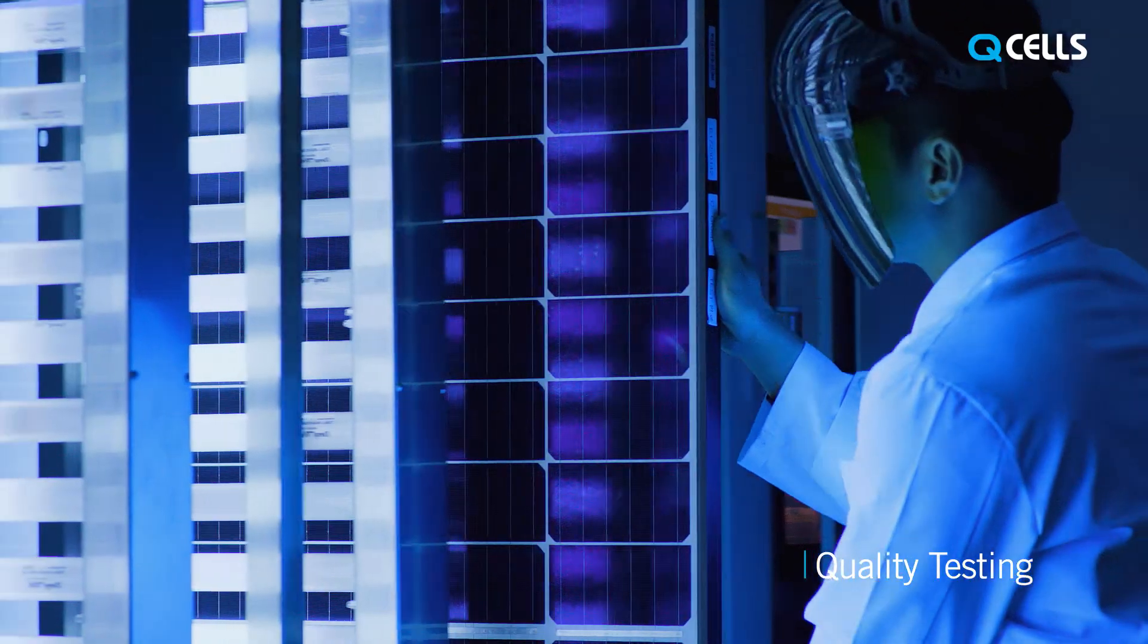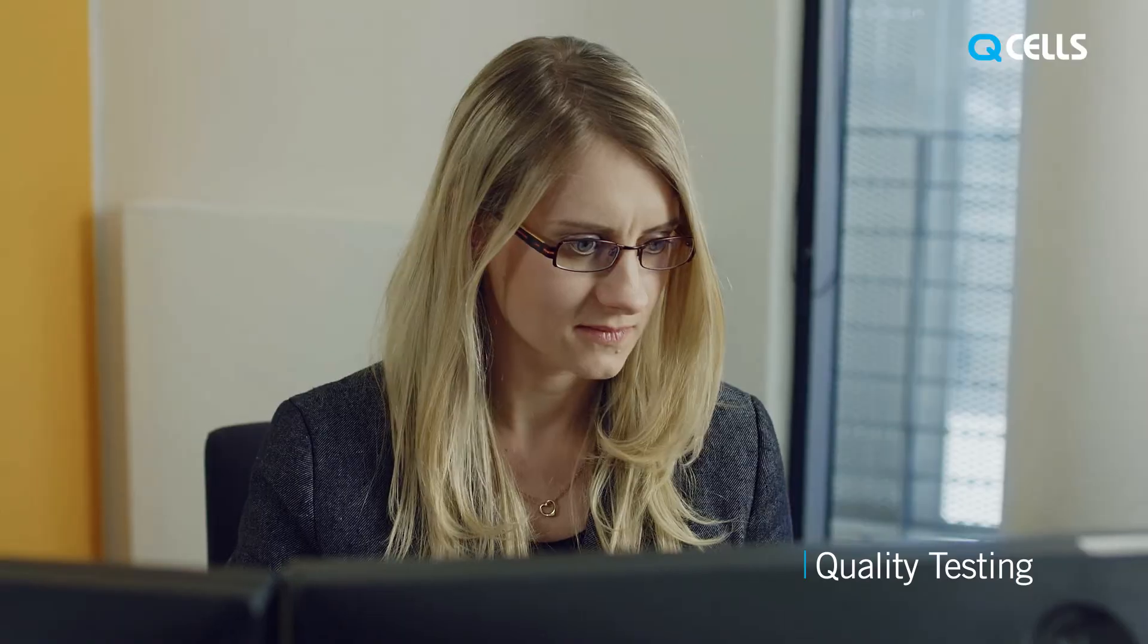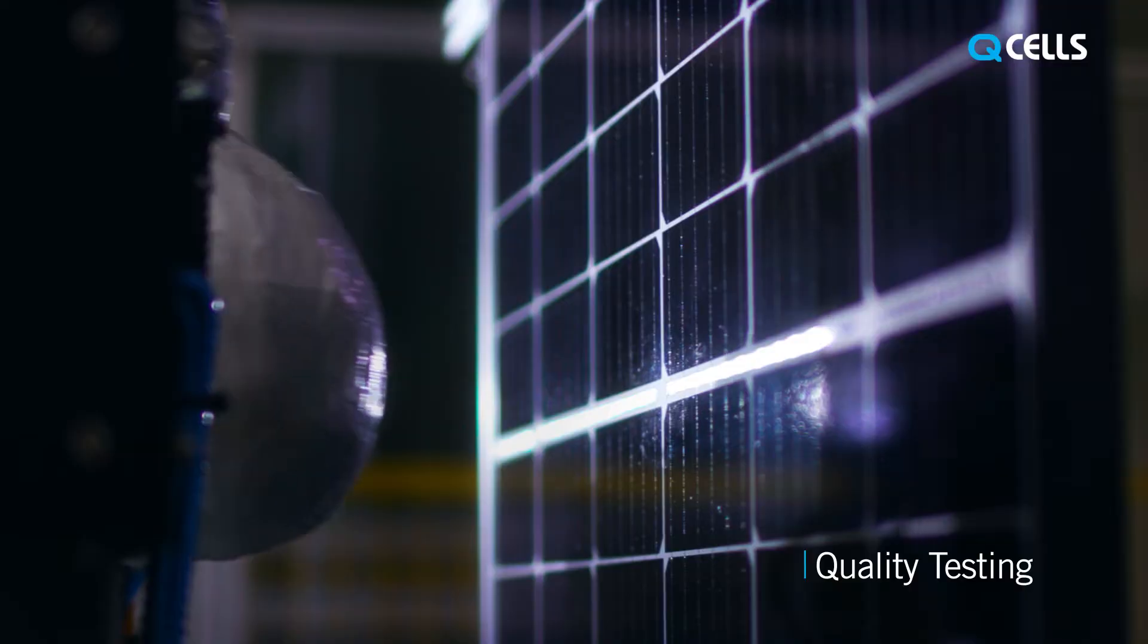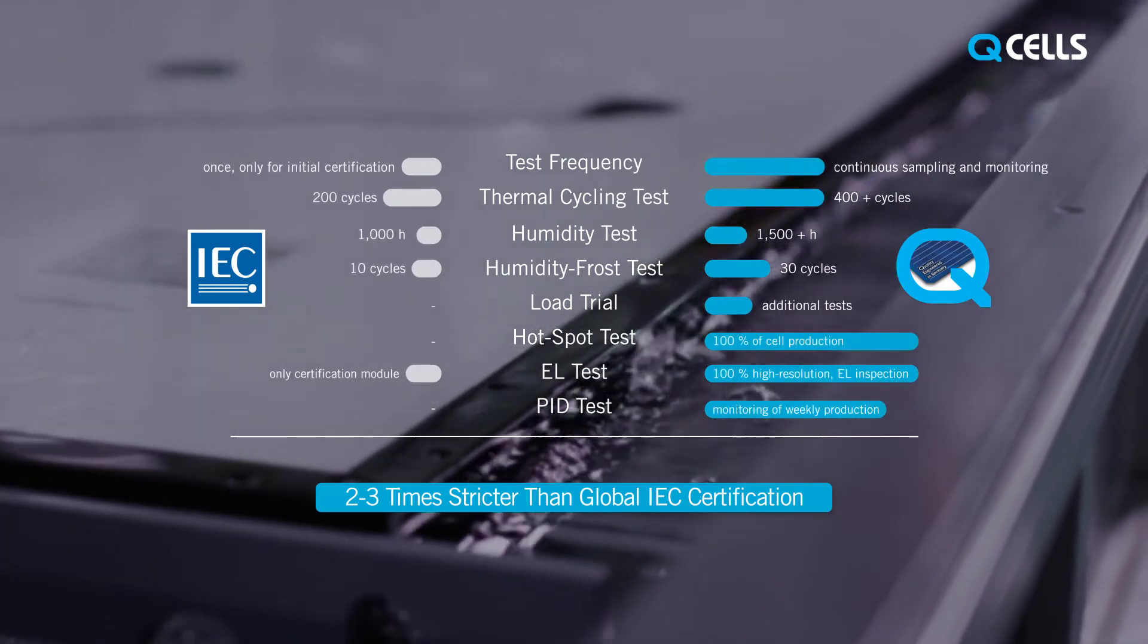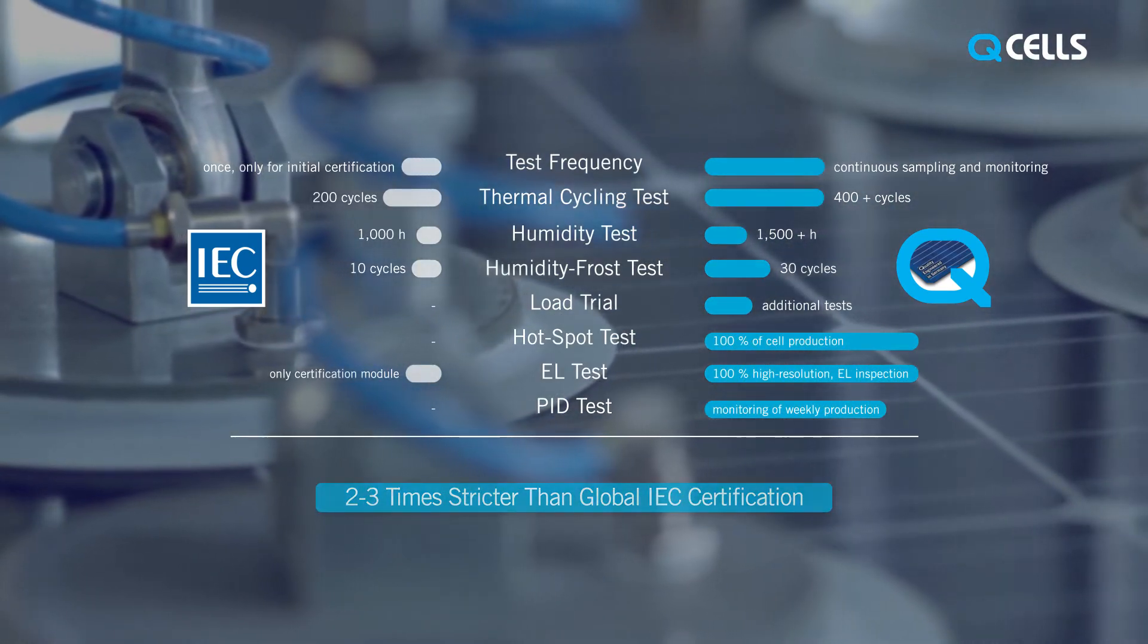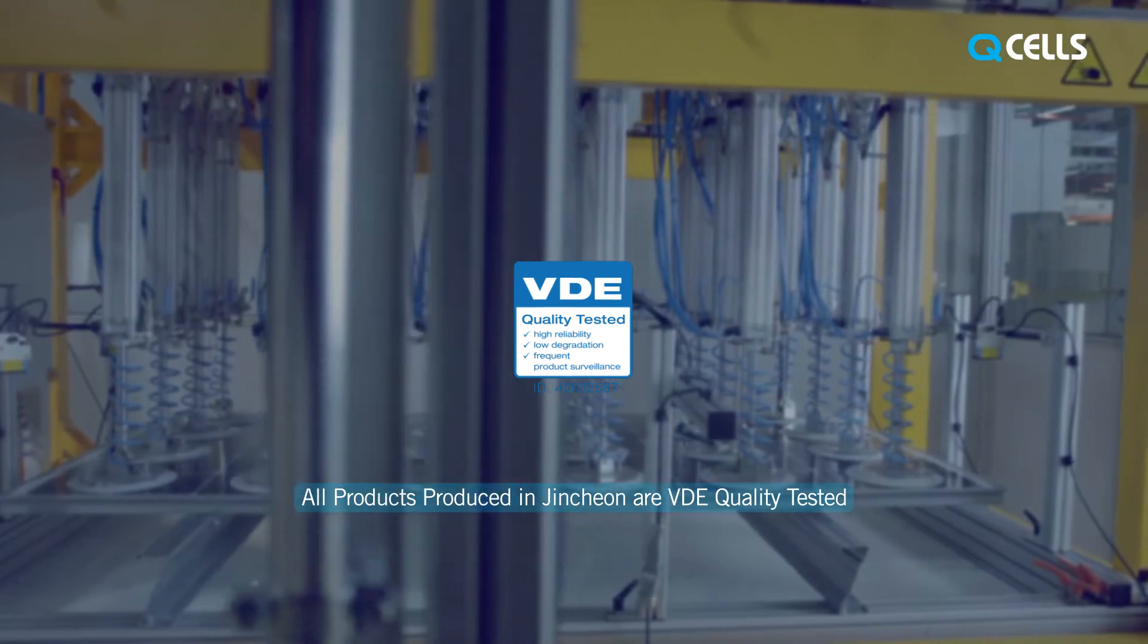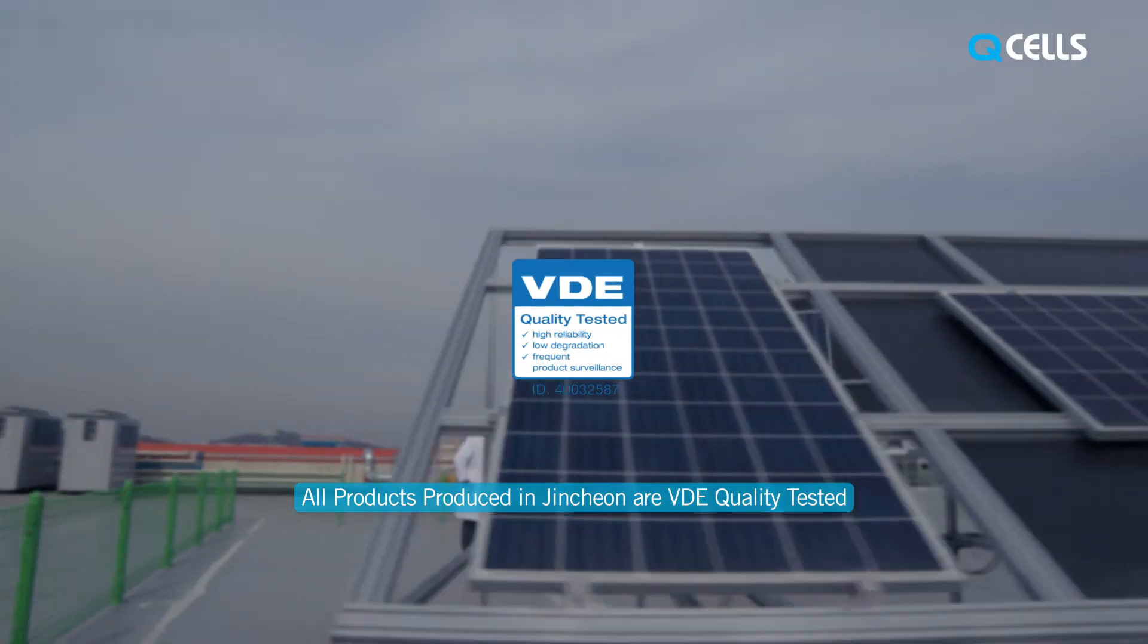Qcells' uncompromising quality is proven and maintained by rigorous tests. The Jinchun factory implements its own quality test called Q-Tested, which is two to three times stricter than global IEC certification. Moreover, all products produced in Jinchun are VDE quality tested.